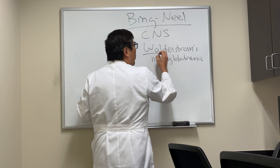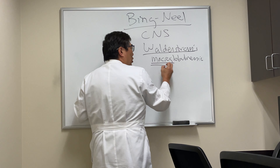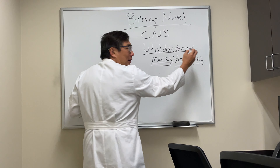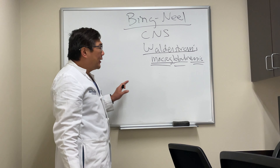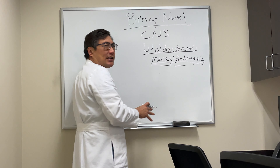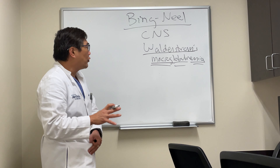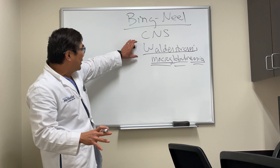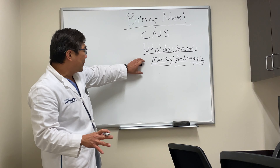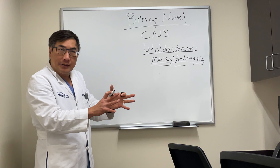The problem in Waldenstrom's is macro big globulins in your blood — macroglobulinemia. Waldenstrom's macroglobulinemia is a form of lymphoproliferative disorder characterized by both the cells that are abnormal but also the product of those cells, which is the immunoglobulin.